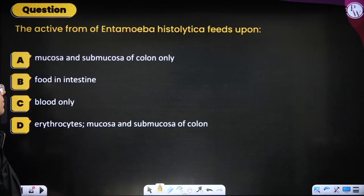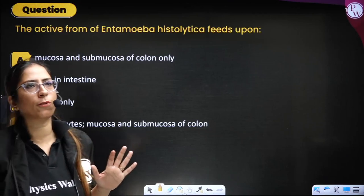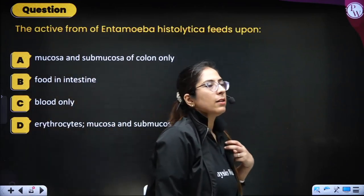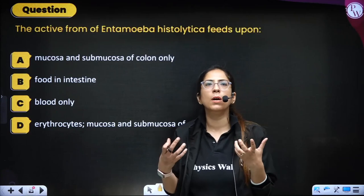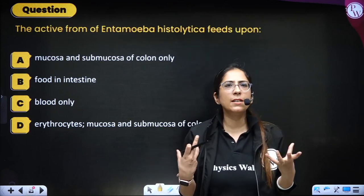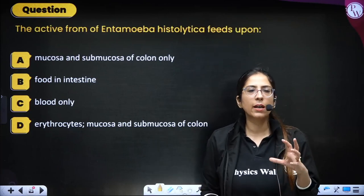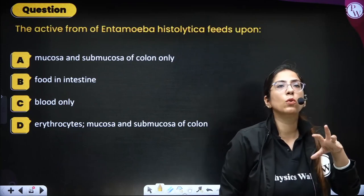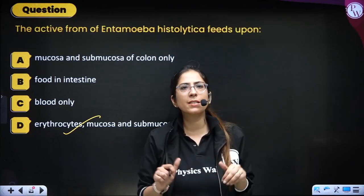Next question: the active form of Entamoeba histolytica feeds on — mucosa and submucosa of colon, food in intestine, blood only, or erythrocytes plus mucosa and submucosa of colon. Whenever cystic forms of Entamoeba histolytica enter the body via contaminated food, they feed on RBCs (erythrocytes) and the mucosa and submucosa of the intestine. Correct option is D.